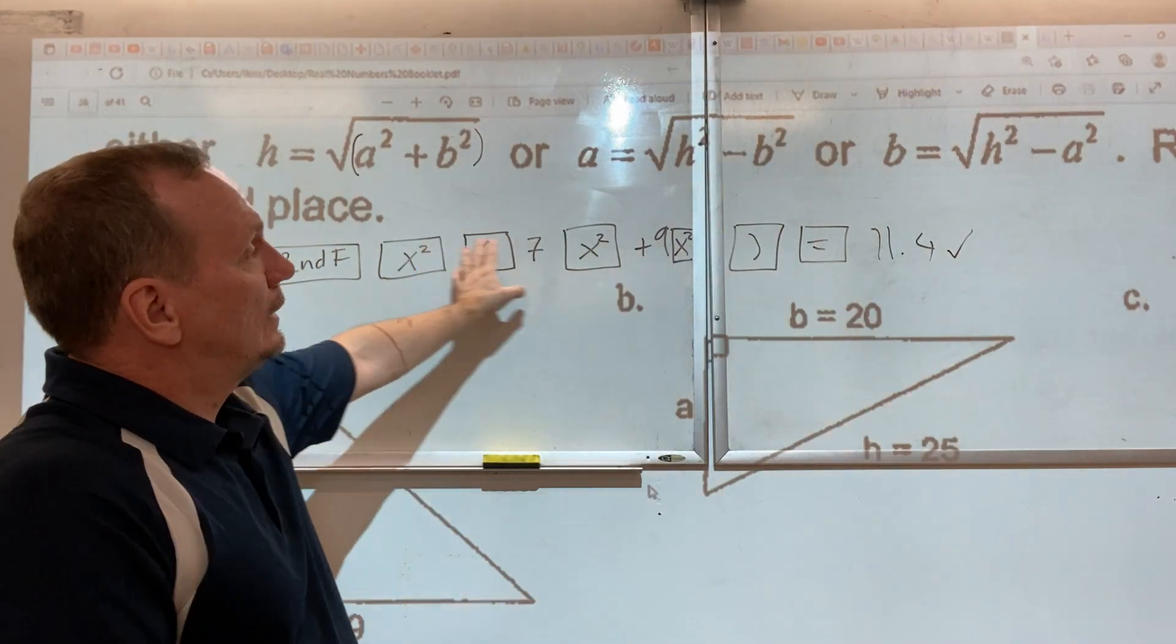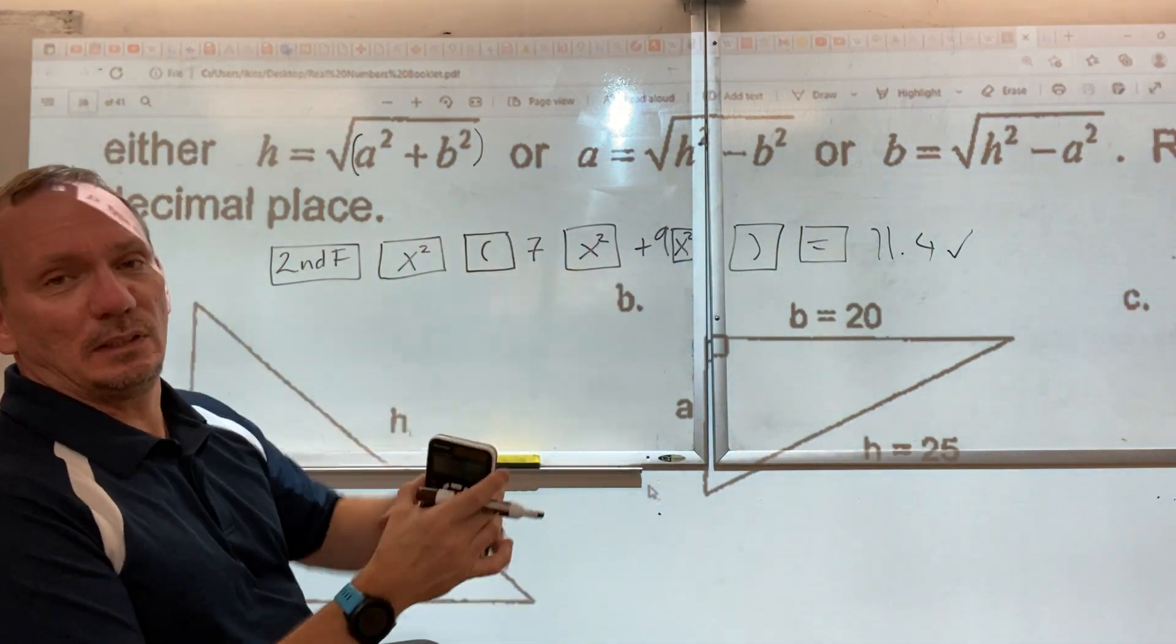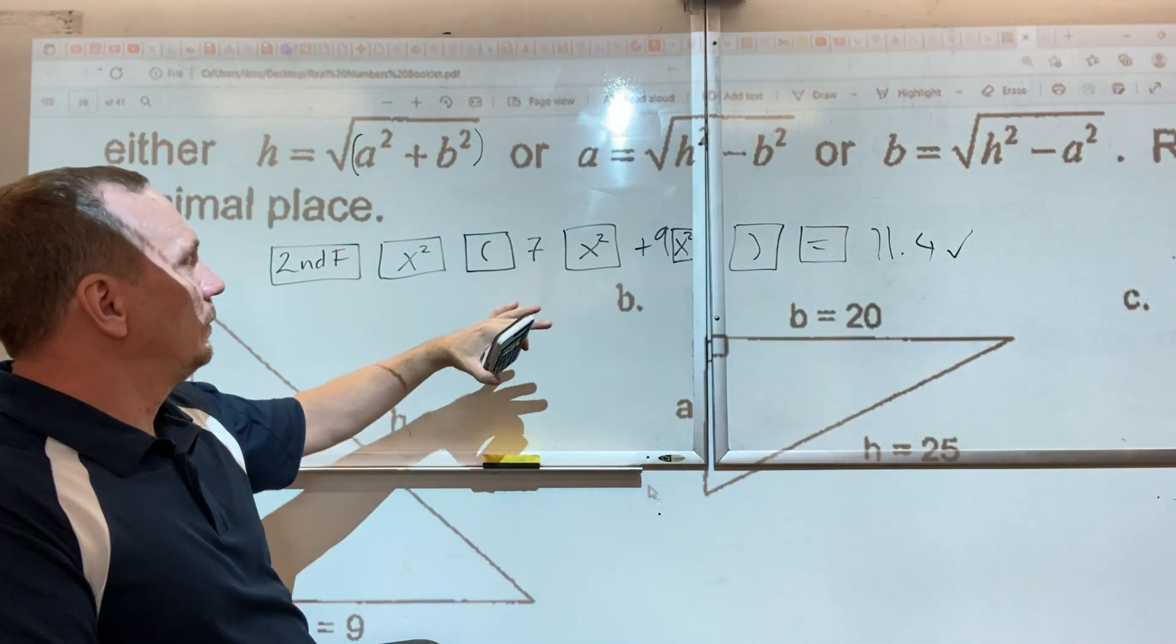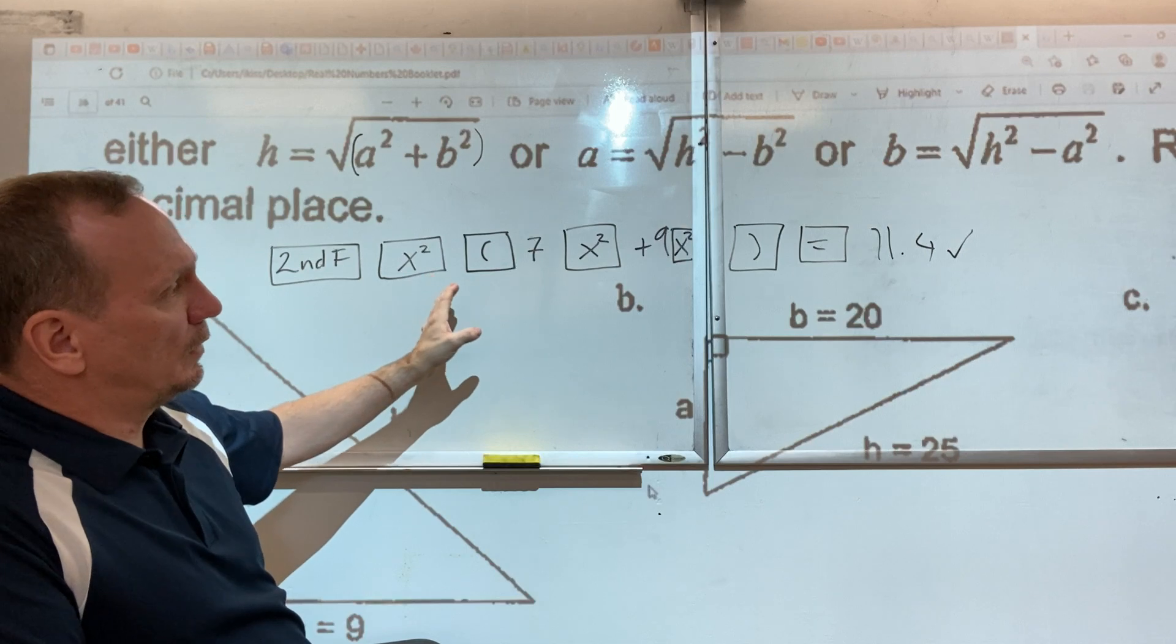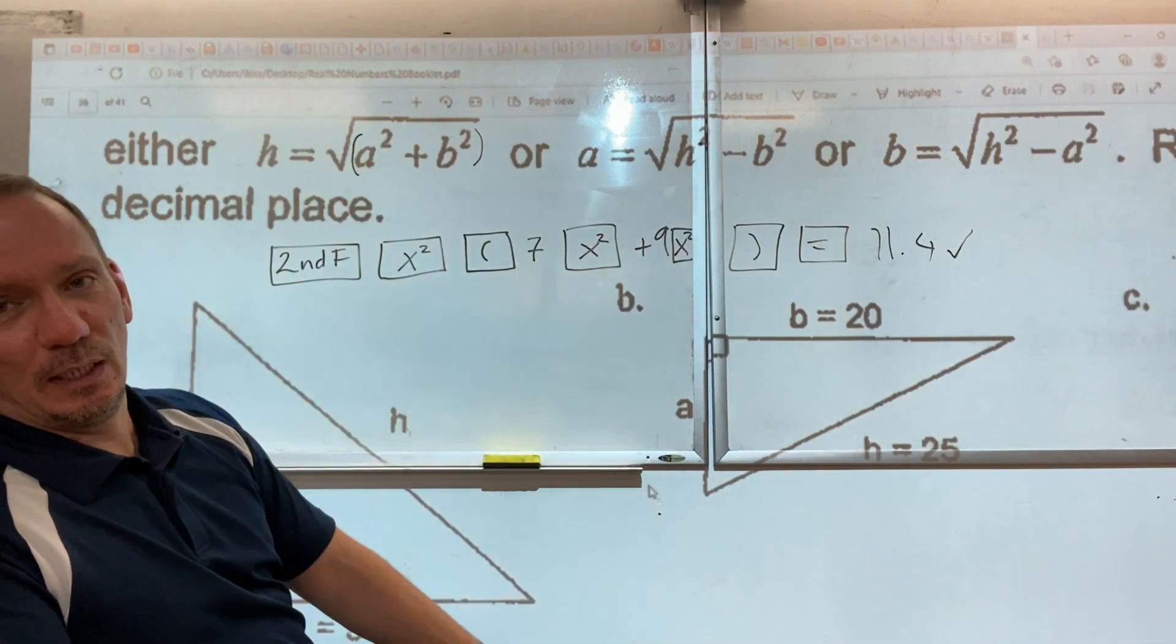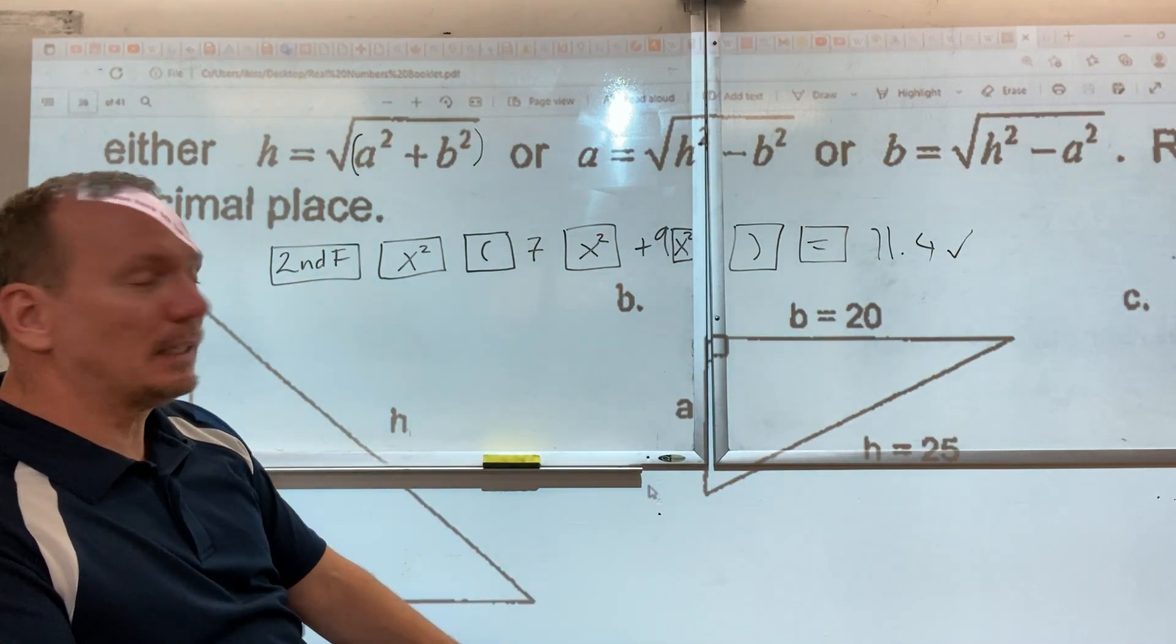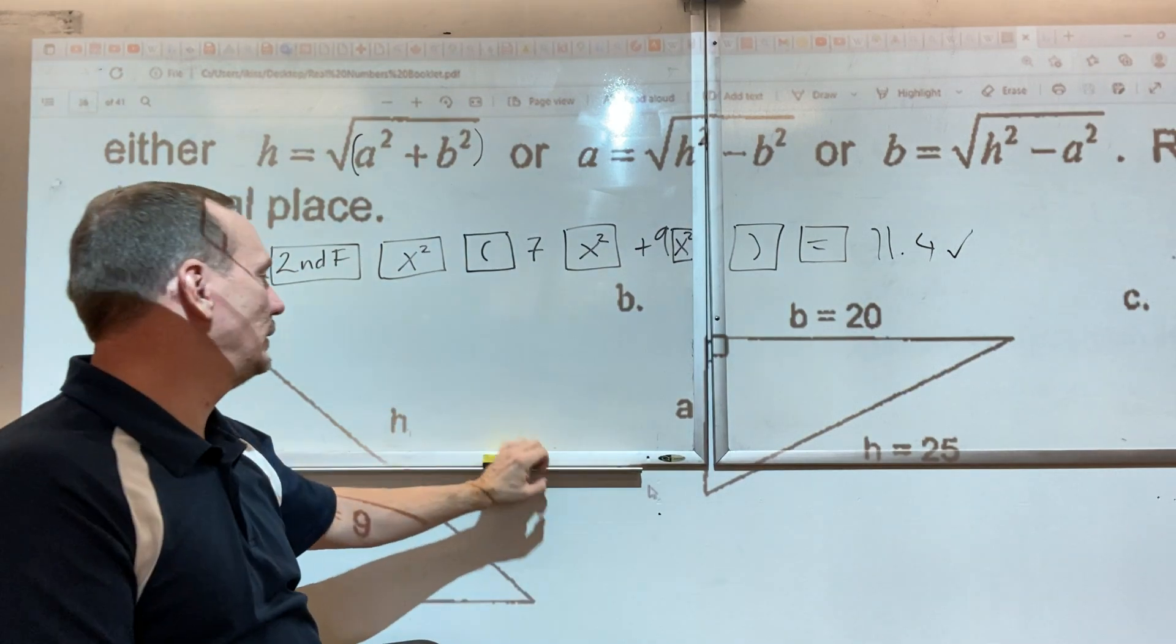In this calculation we don't see on the calculator the 49, we don't see the 81. It's all disappeared. Nobody needs to know those numbers. All you need is the 11.4, and that's what you're getting out of the calculator. So that's how this looks like.